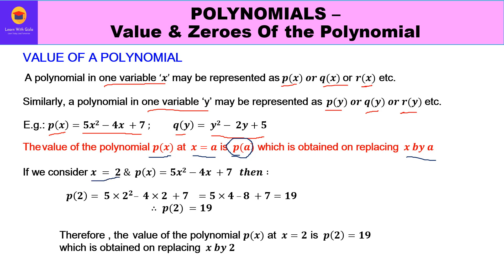For example, if x = 2, we replace x by the number 2 in the polynomial p(x) = 5x² − 4x + 7. So p(2) = 5 × 2² − 4 × 2 + 7 = 5 × 4 − 8 + 7 = 20 − 8 + 7 = 19. So p(2) = 19. The value of the polynomial p(x) at x = 2 is p(2) = 19, obtained by replacing x by 2. The value we get when we replace x by a number is the value of that polynomial.